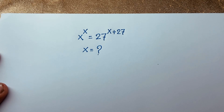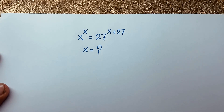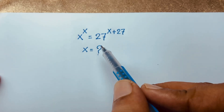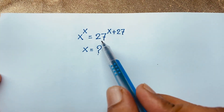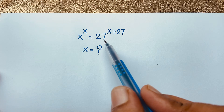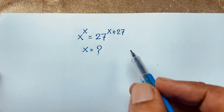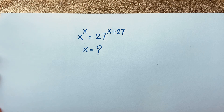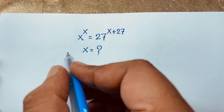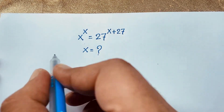Hello everyone, welcome to Russia's Classroom. Today we have solved a nice math olympiad question. This question is: x to the power x is equal to 27 power x plus 27. What is x? How to solve this exponential math problem? So, solution.